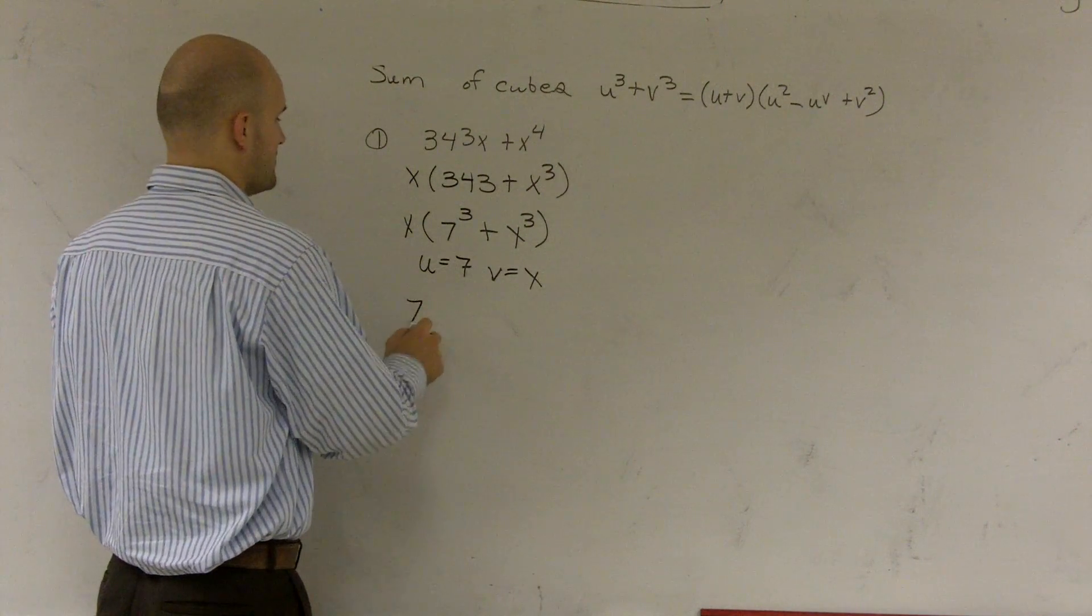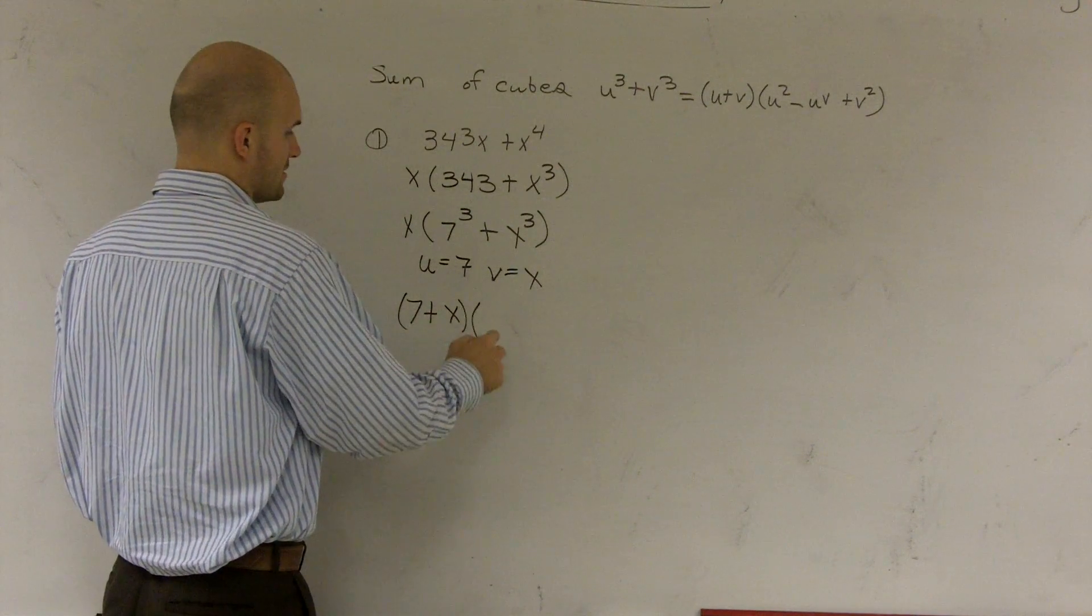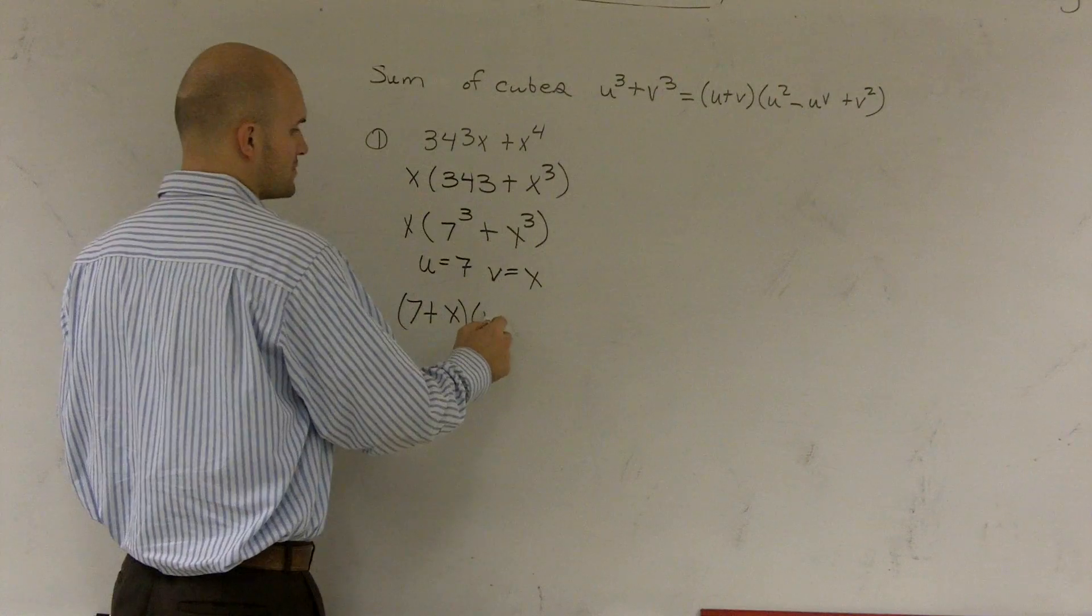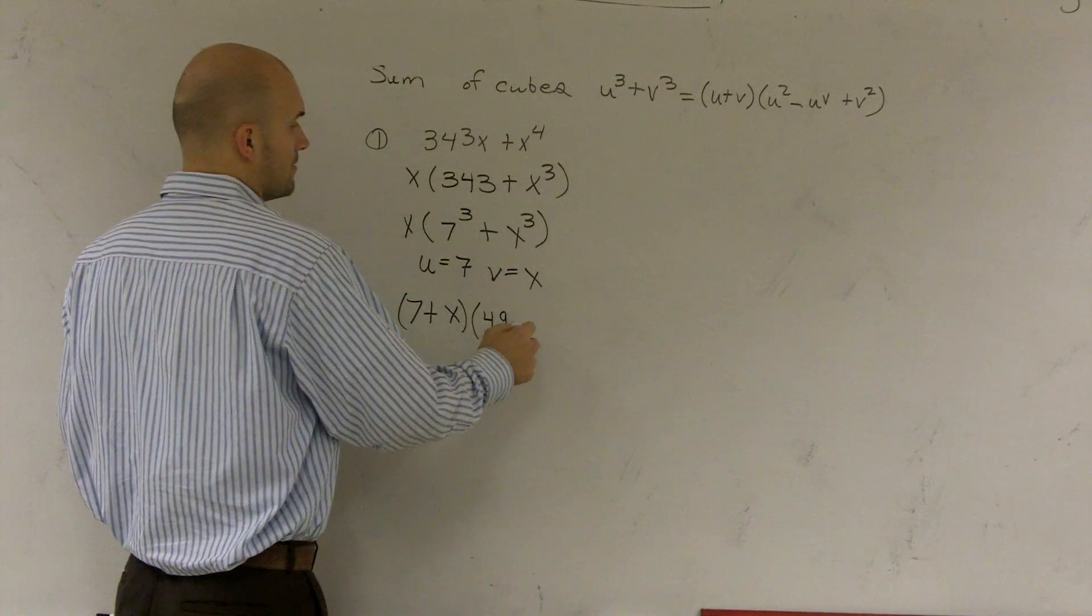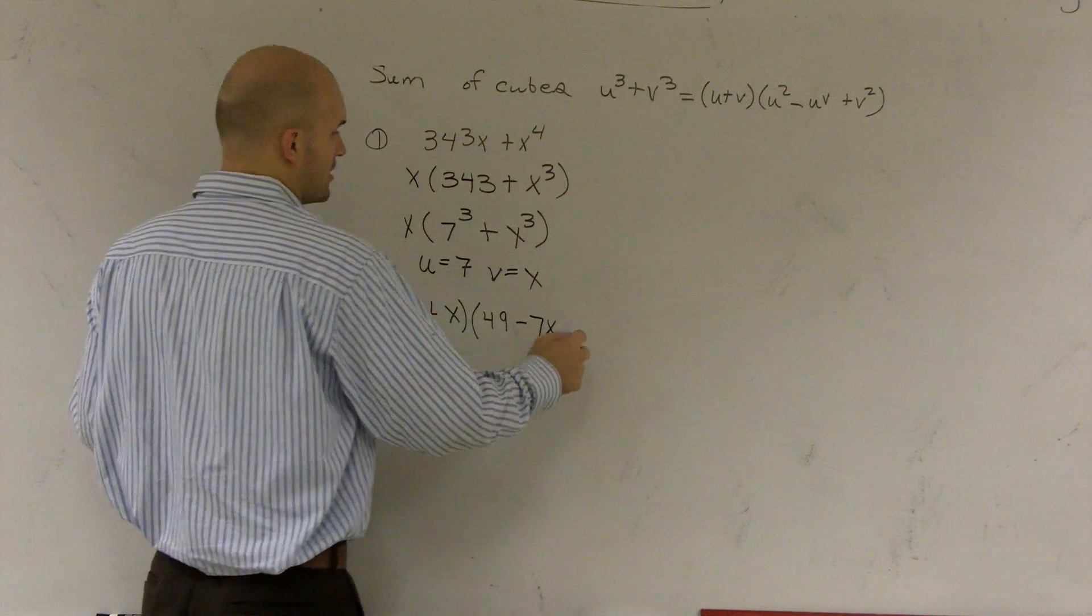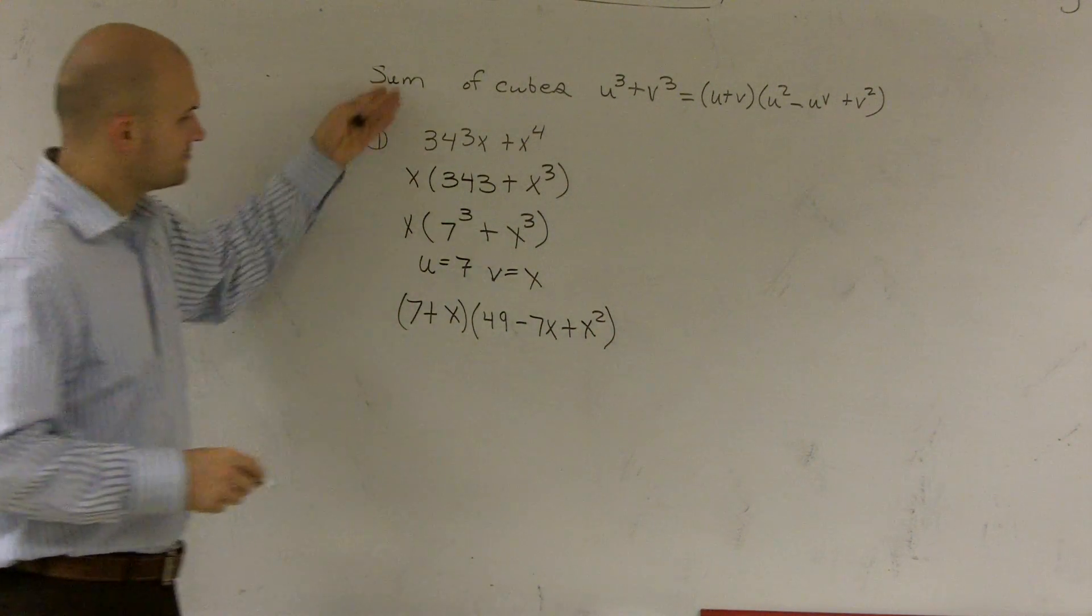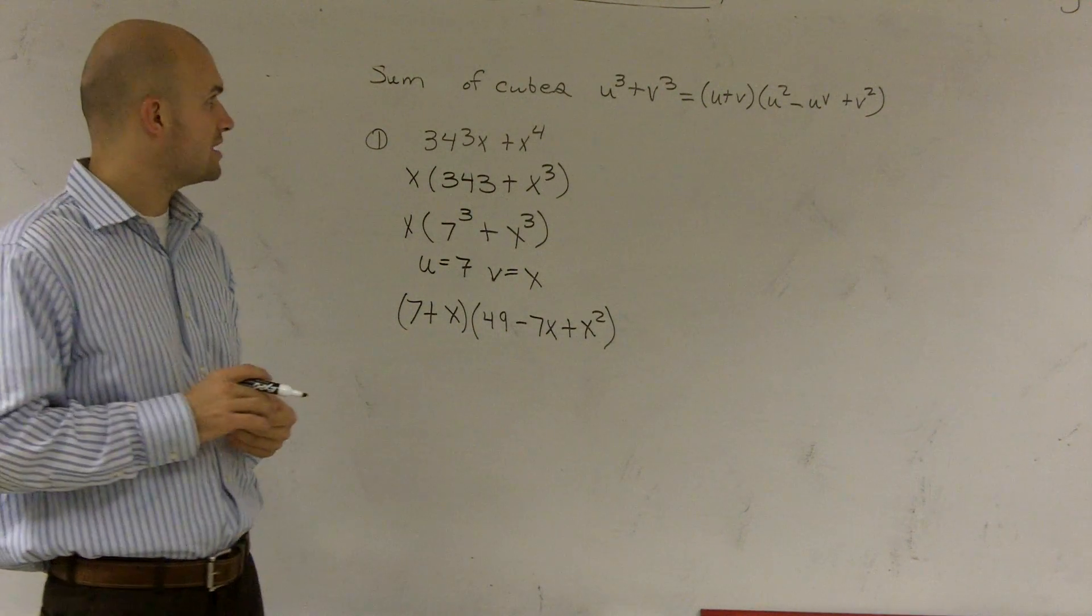So I say 7 plus x times 7 squared, which is 49, minus 7 times x, which is 7x, plus x squared. And that is now factored using the sum of cubes.